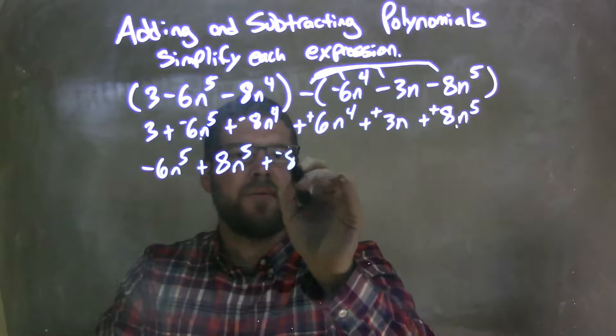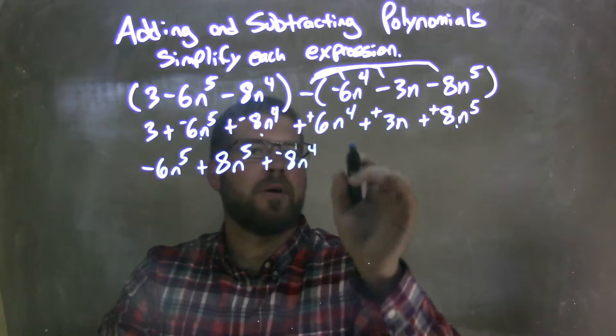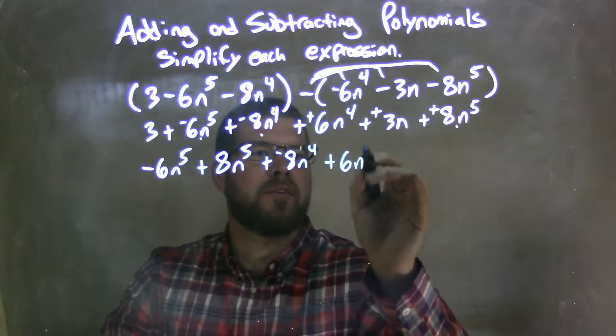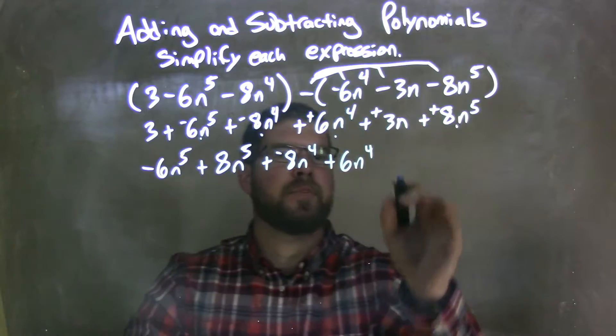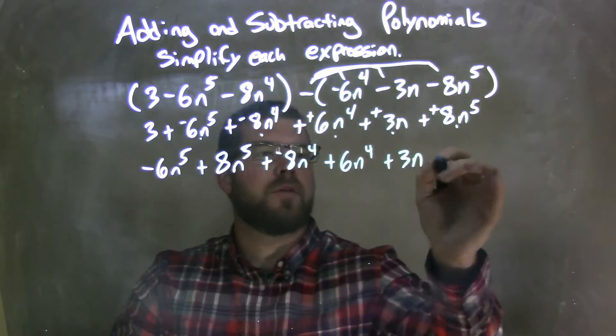Now I have the 4th powers. And if you want to make a little mark on ones that you've done just underneath, that kind of helps. Negative 8n to the 4th. I have this plus 6n to the 4th right there. And then left with just a 3n, so you have plus a 3n right there. And then plus a 3.